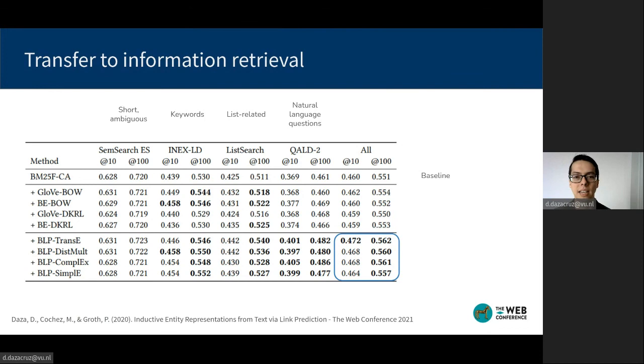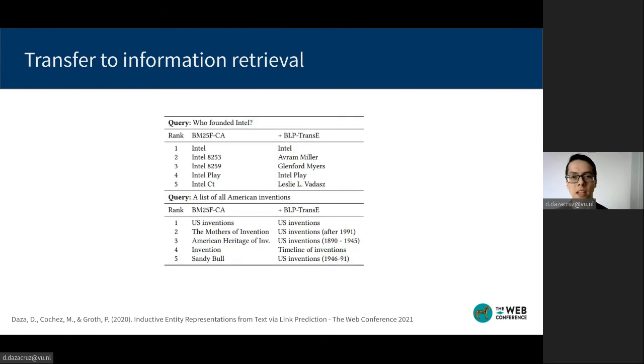We observe that BLP results in statistically significant improvements over BM25, which indicates that it has learned to map questions about entities and their descriptions to vectors that are close in the embedding space.